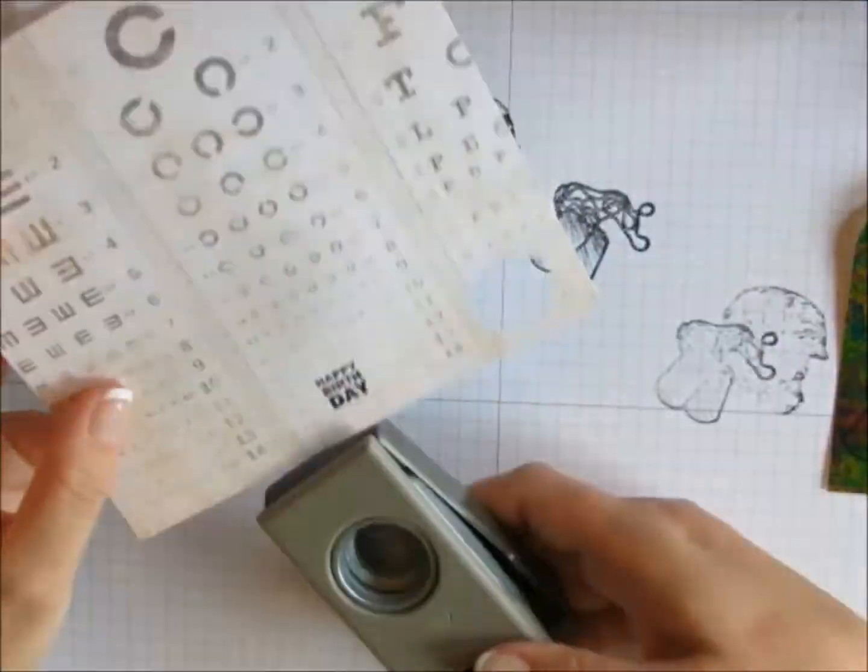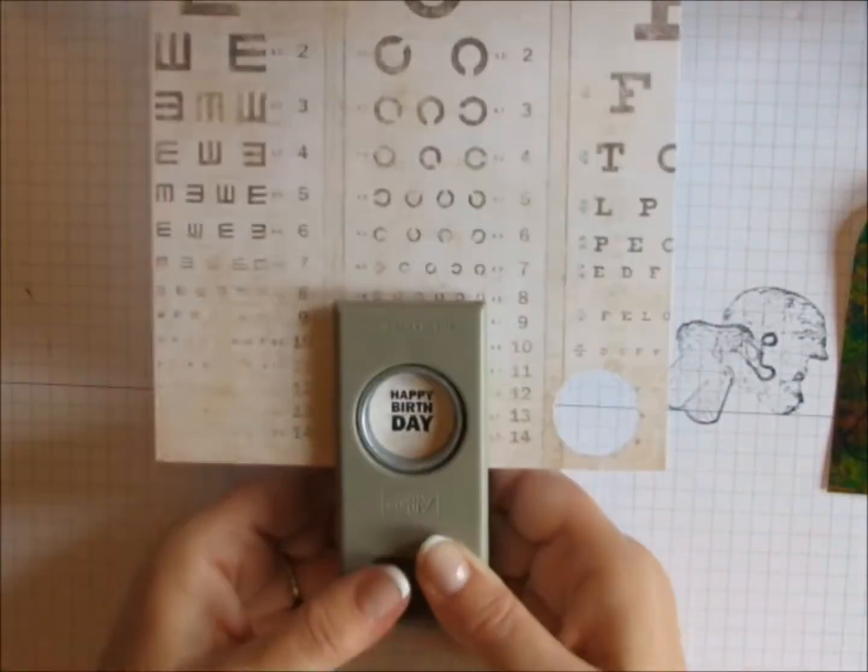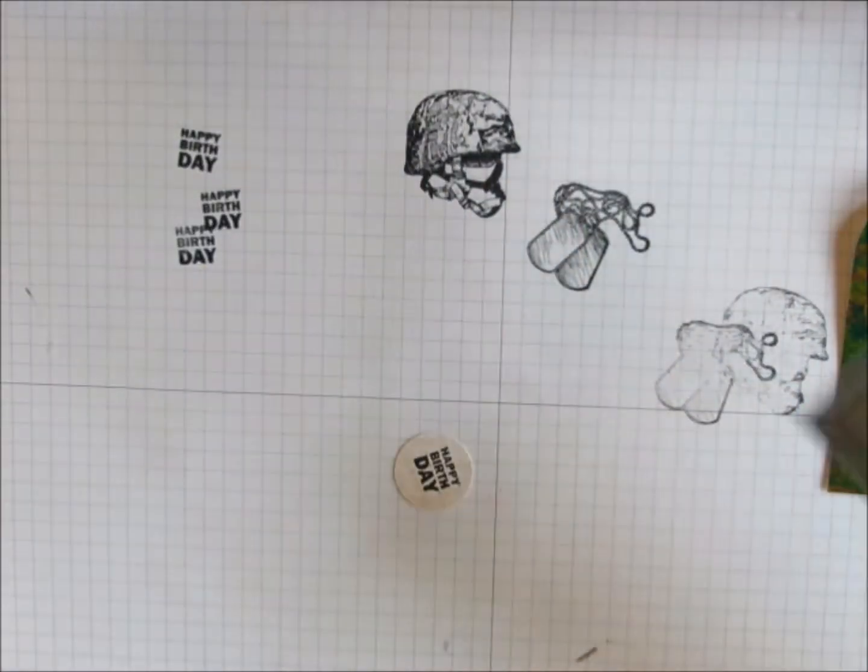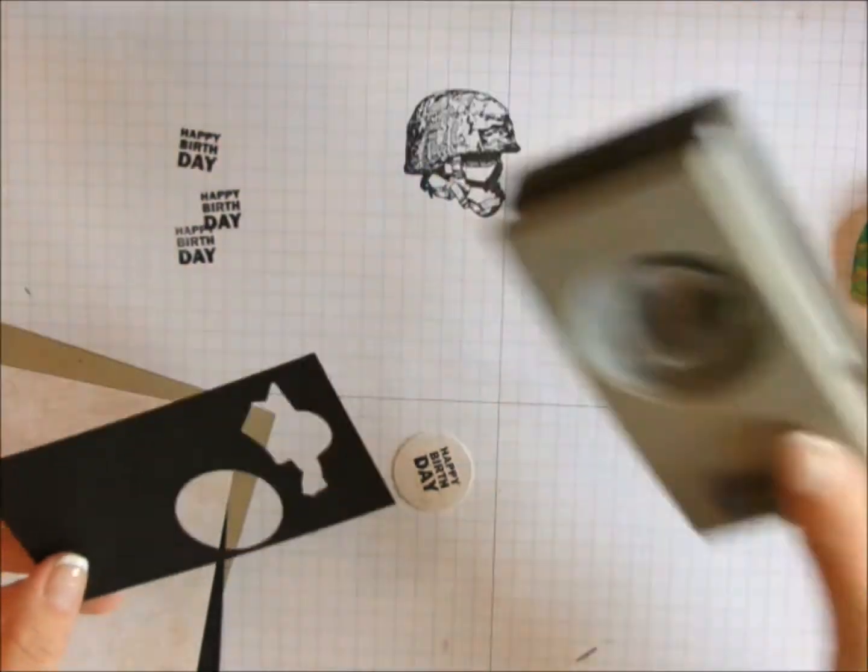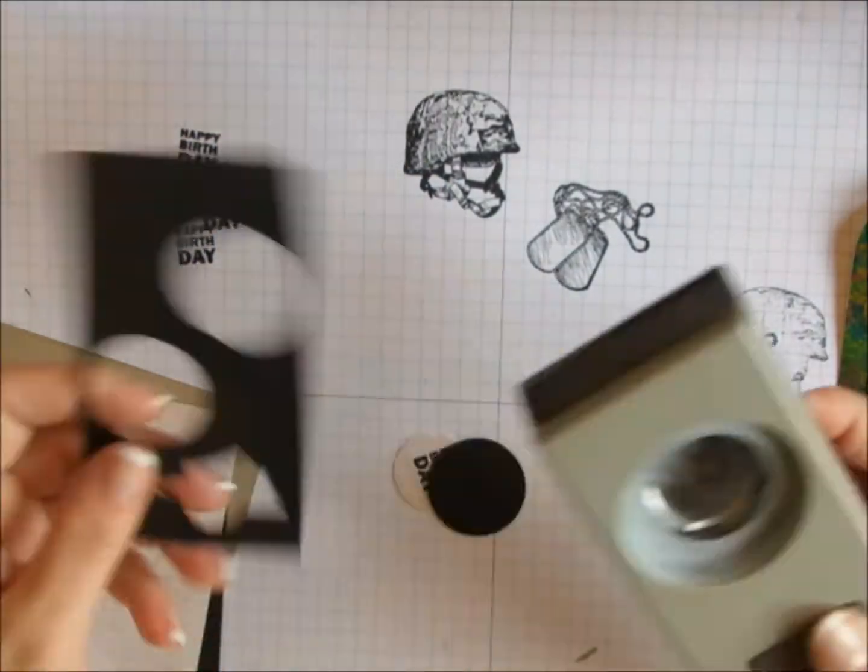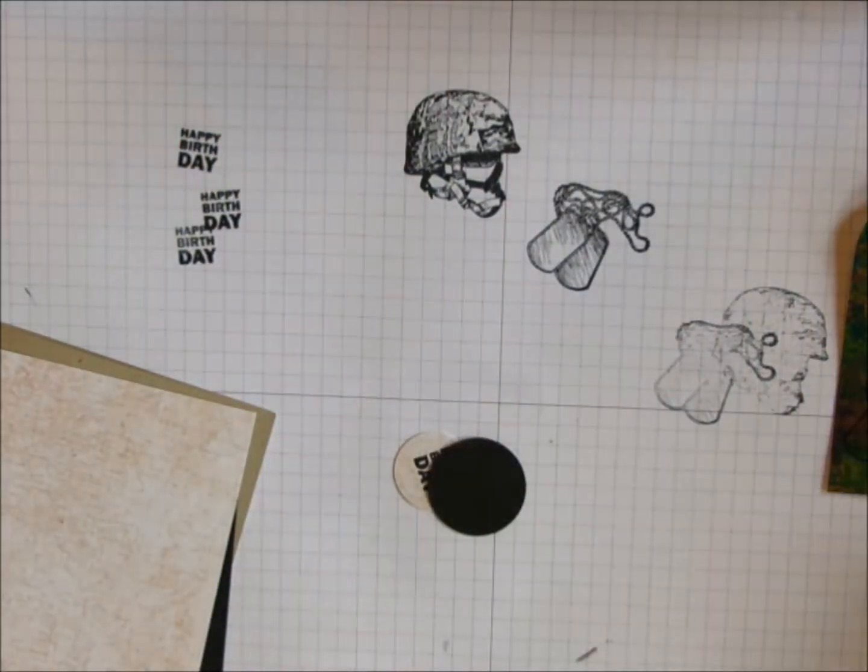And now I'm going to punch it out using my one inch circle punch. And by punching upside down, I can line up that sentiment exactly where I want it to punch out. Now I've got a one and quarter inch circle punch, and I'm just going to punch out a basic black piece.